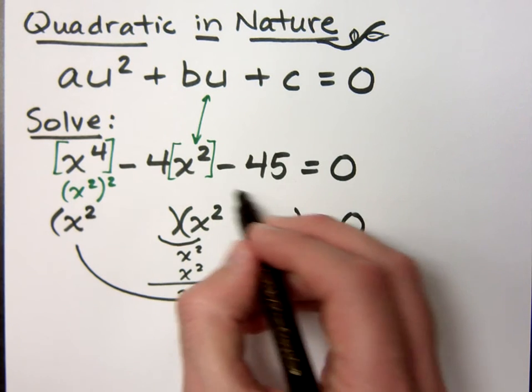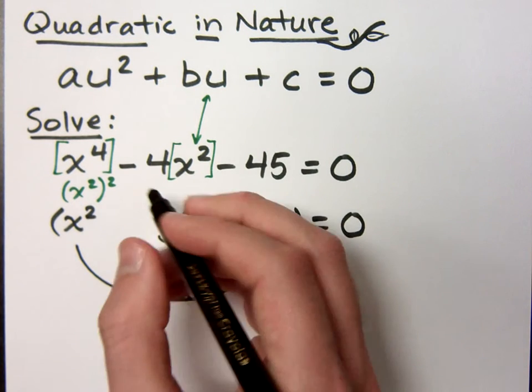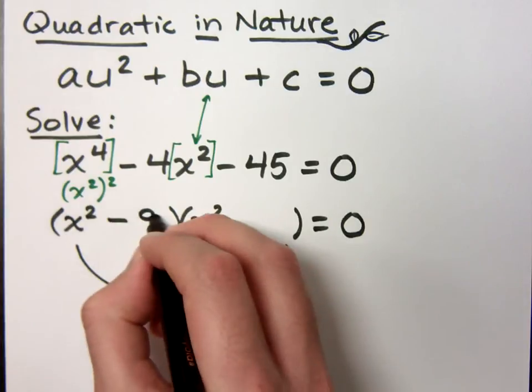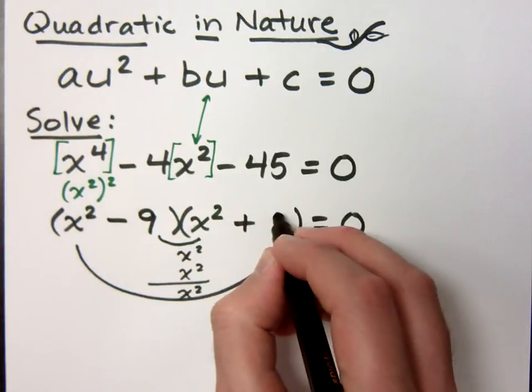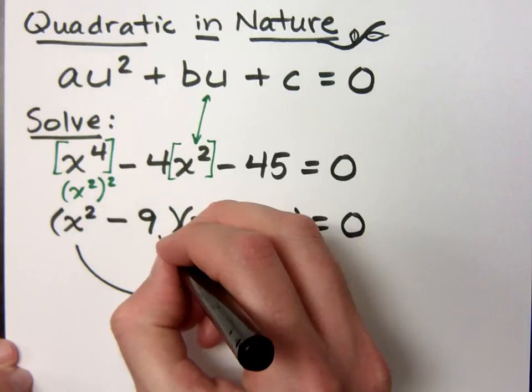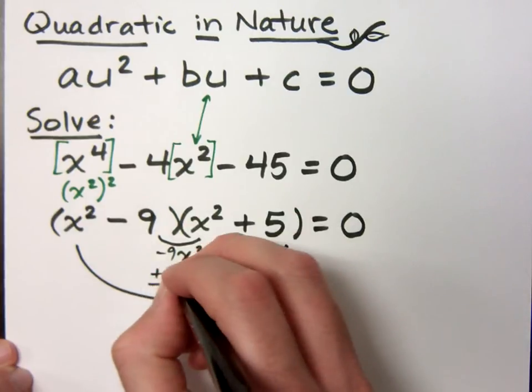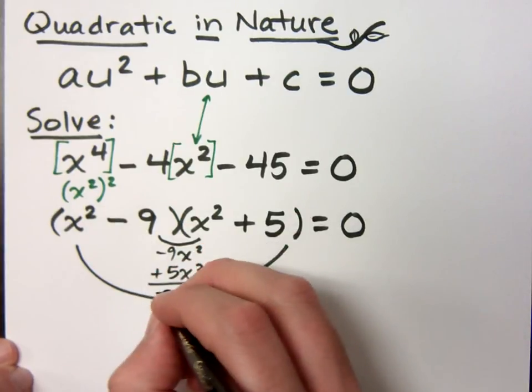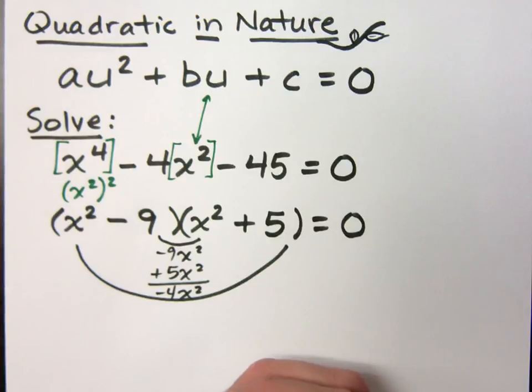Now to find numbers that multiply to give you -45 and add to give you -4, well that's just -9 and +5. So really you're just factoring this like you've done before, but now things are a little more complicated given the type of equation that we have. So you see here I get -9x², +5x², and there's my -4 when it's all said and done.